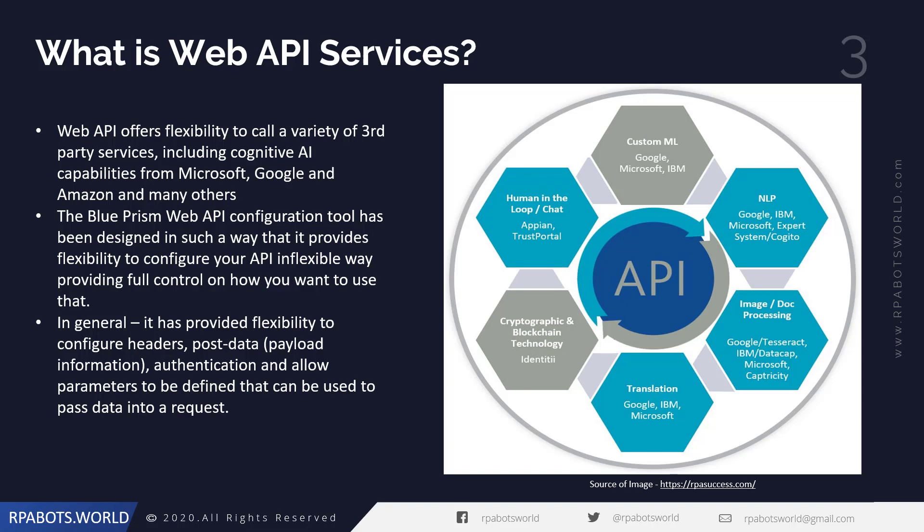If you look at the screen, there are many APIs available on a portal — the DX portal — and there are also third-party vendors providing APIs. If you talk about human-in-the-loop and chat, we have an API for the APN and Trust portal. For email, we have APIs from Google, Microsoft, IBM, and other leading providers. Similarly, for natural language processing, we have APIs from Google, IBM, Microsoft, and many other third-party providers.